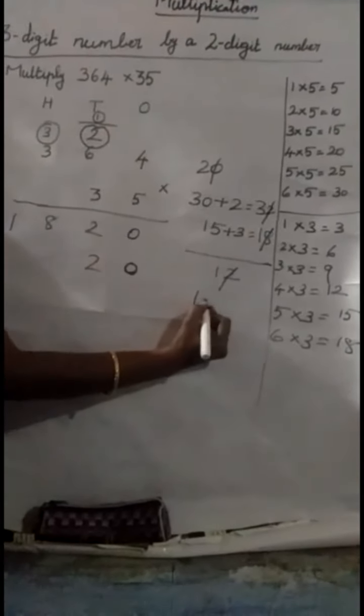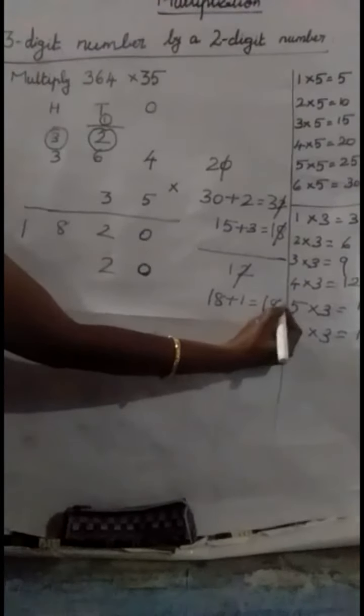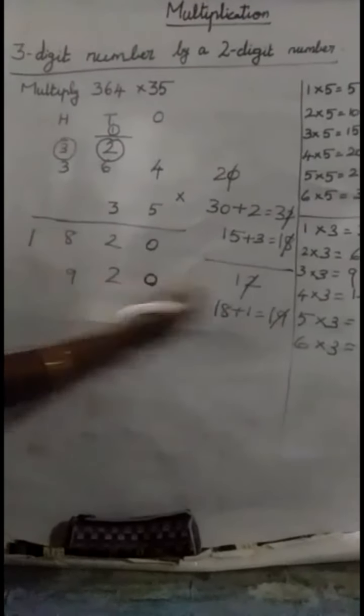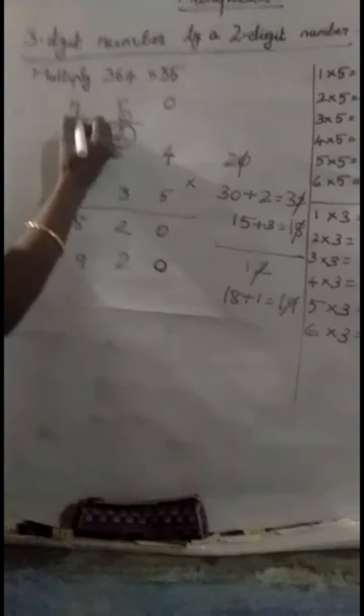6, 3s are 18. 18. What's a new reminder? 1. 18 plus 1. 19. 19 is a 2 digit number. 9 here. 1 in the 100th place. Just draw one line and 1.